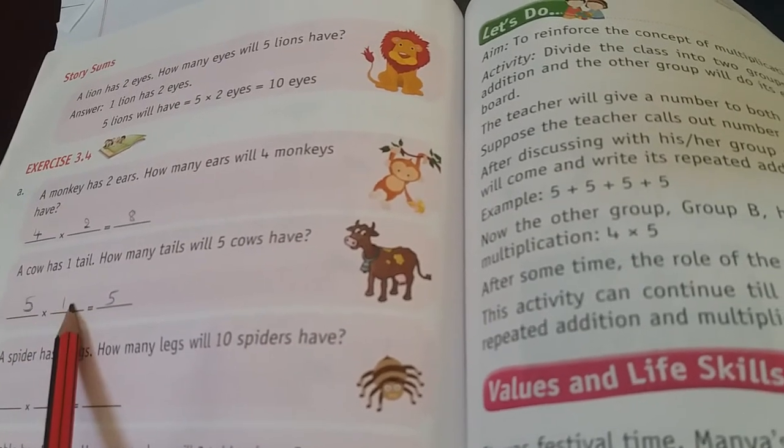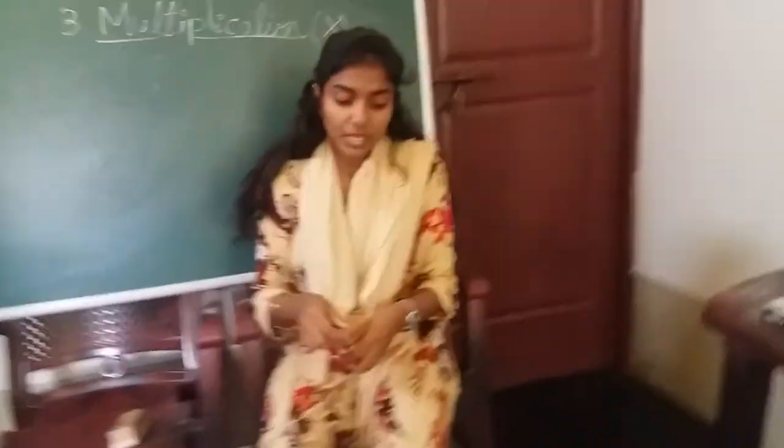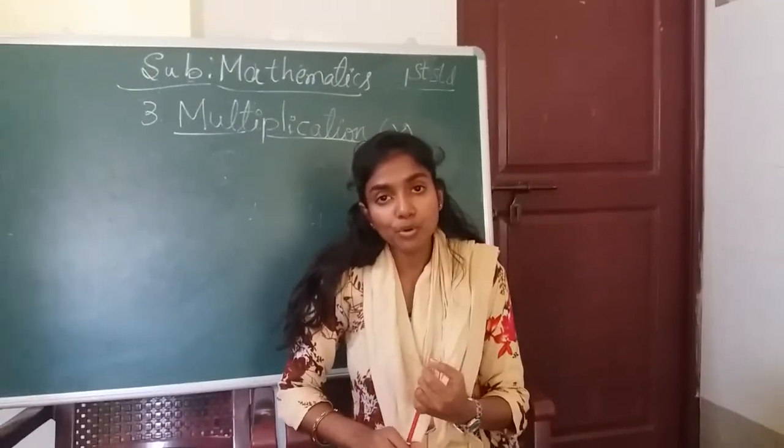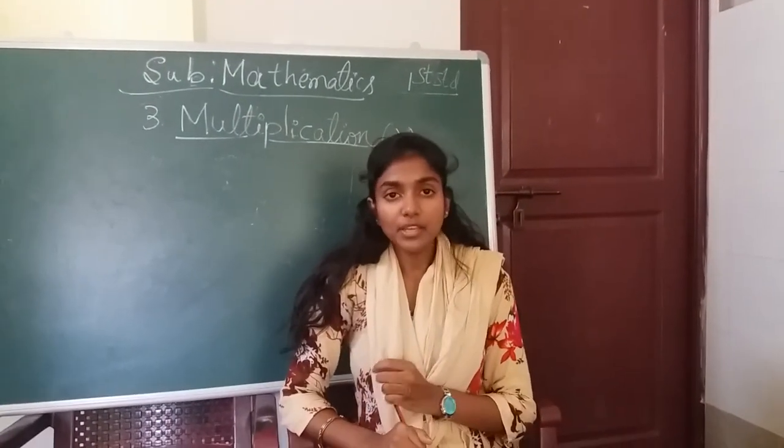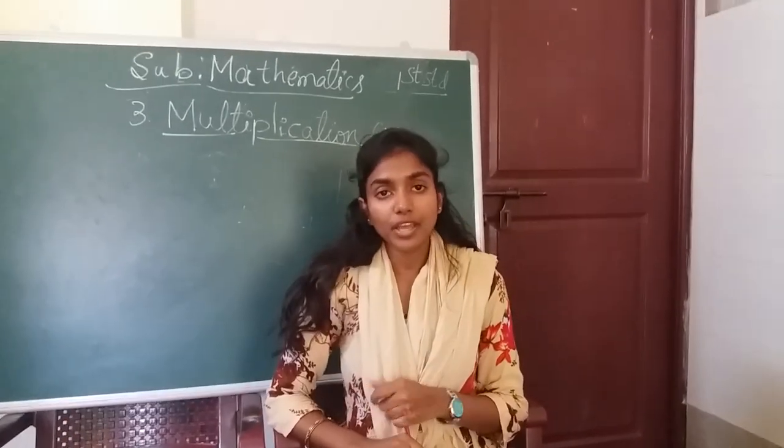So 5 cows into 1 tail equals 5. And the remaining 3 problems, you have to do the problems and submit to me. We will meet in the next class with the new chapter. Thank you, bye!